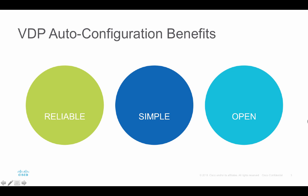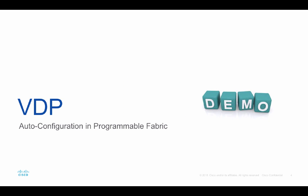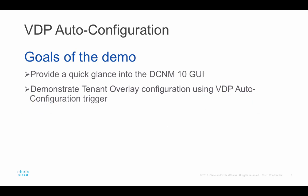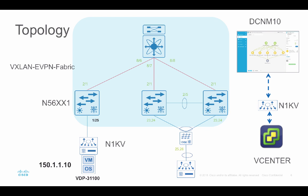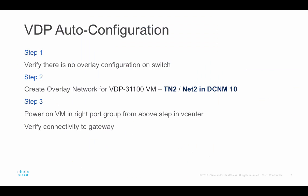Let us take a look at a live demonstration. The goal of the demo is to provision a tenant overlay network using DCNM 10 with the help of VDP Auto Configuration. This is the topology for today's demonstration: we have a pre-existing VXLAN EVPN Programmable Fabric, and the focus will be on the highlighted portion. I have a VDP session established between the N1KV and the Nexus 5600 switch on port 125.